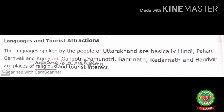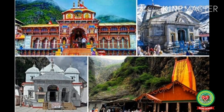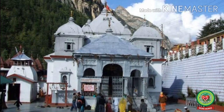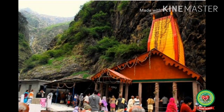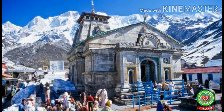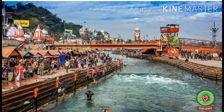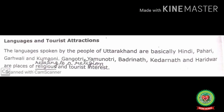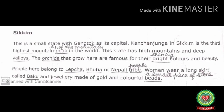Gangotri, Yamunotri, Badrinath, Kedarnath, and Haridwar are places of religious and tourist interest. Religious means relating to a religion. All these are the religious places and tourist attractions of Uttarakhand, as many people go to worship these sacred places. I hope this topic is clear to all.